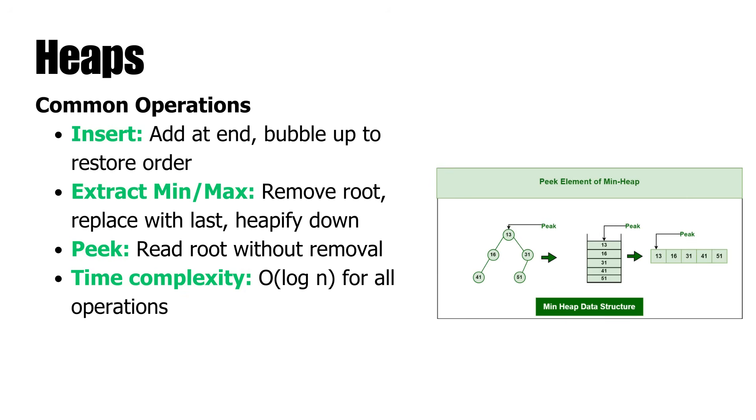Heaps support three primary operations. Insertion inserts a new node at the end and bubbles it up to the correct position to reorder the heap. Extraction of the minimum or the maximum removes the root, replaces it with the last node, and then performs a heapify down. Peaking is merely reading the root without removal. All of these operations take O(log n) time depending on the height of the tree.